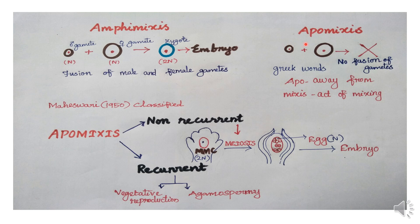But if you say apomixis, there is no fusion of male and female gametes, yet the male and female gamete will develop the same embryo. It is derived from two Greek words: 'Epo' means away from, and 'mixes' means act of mixing.